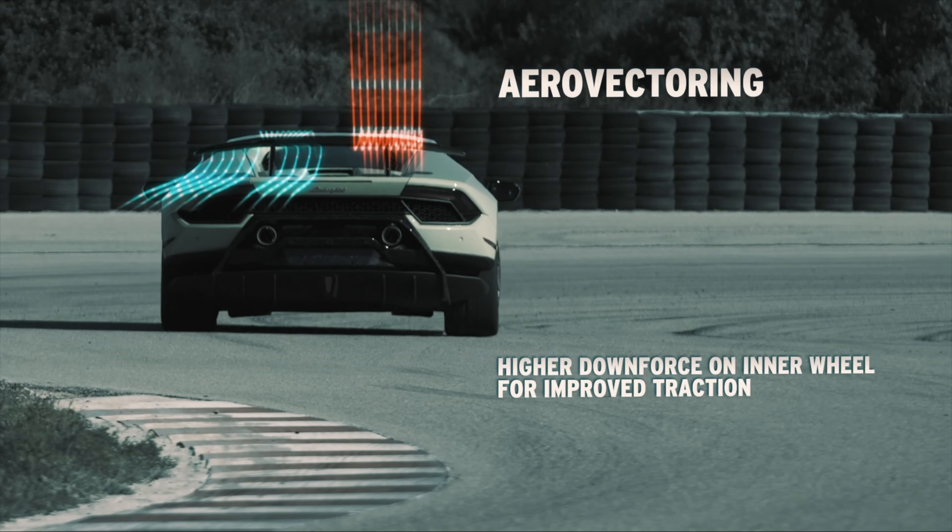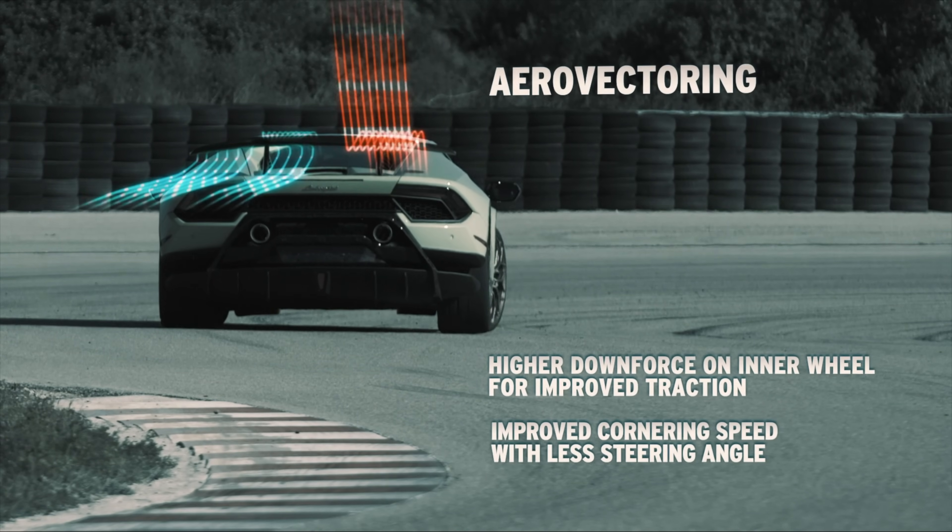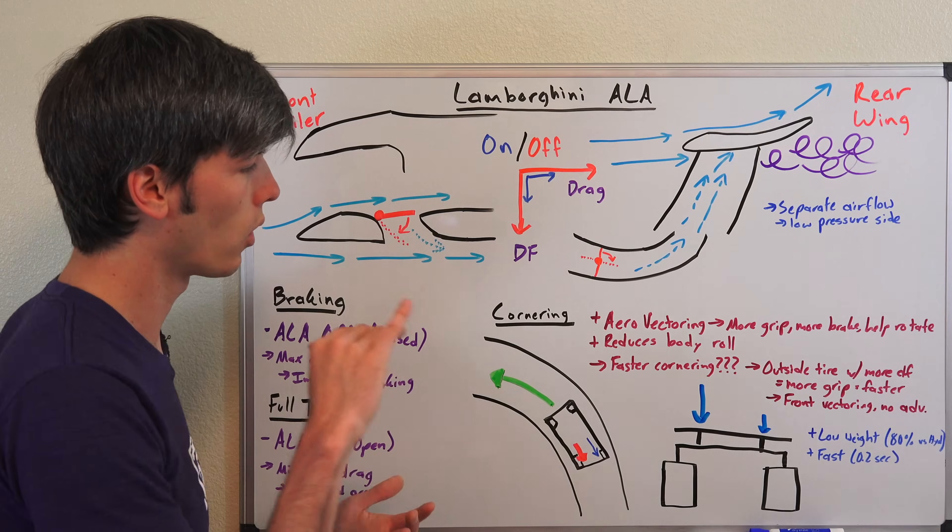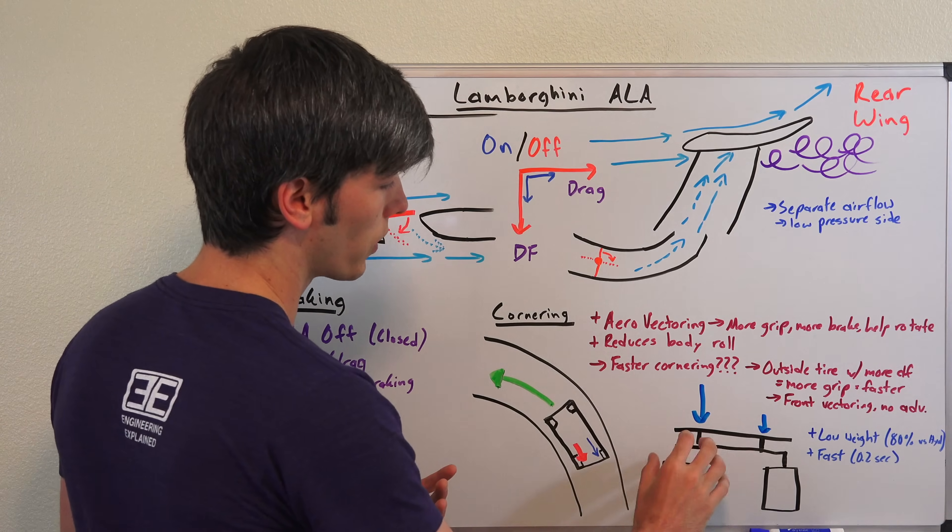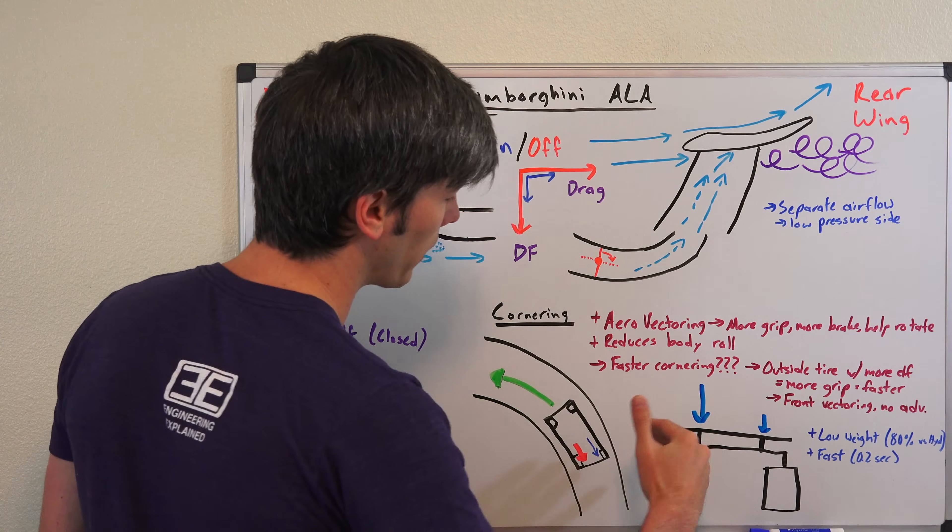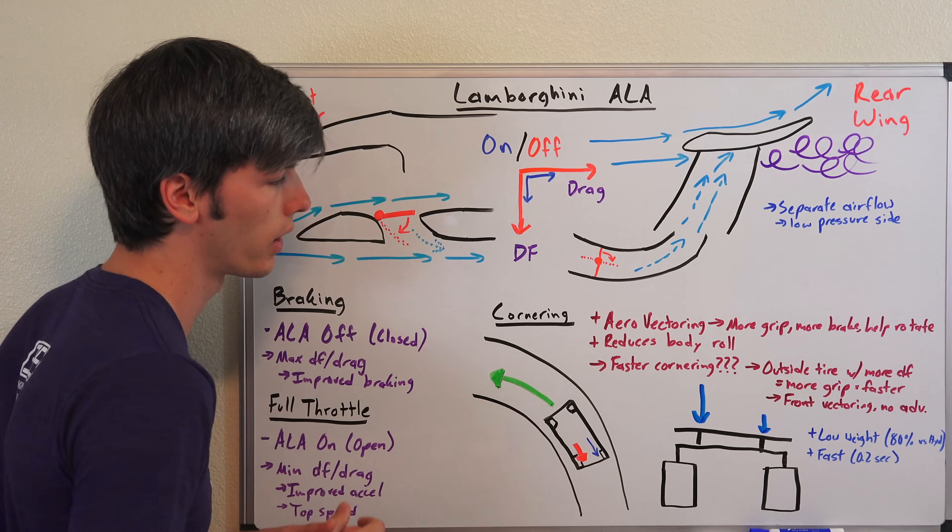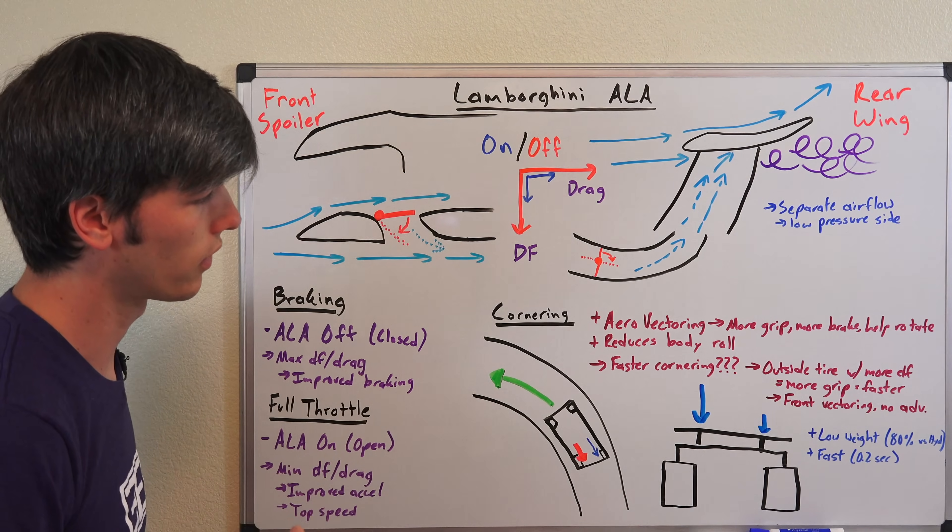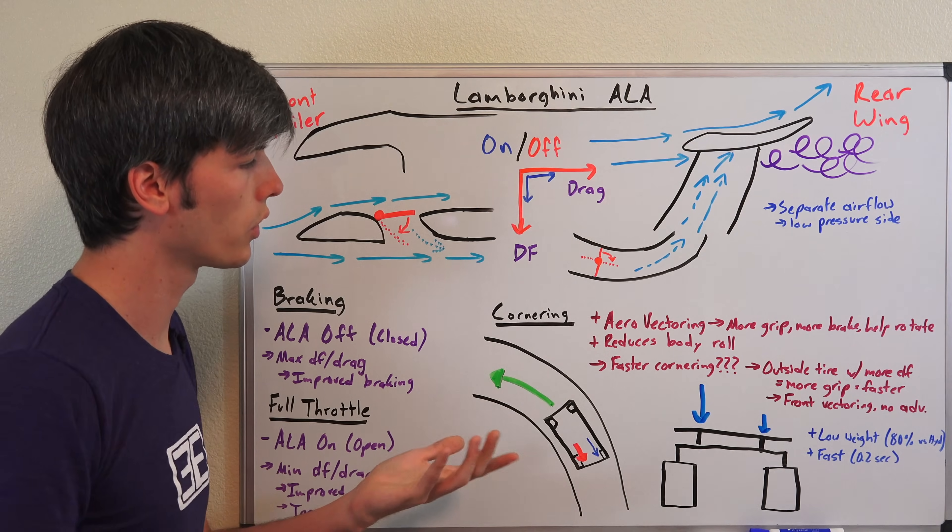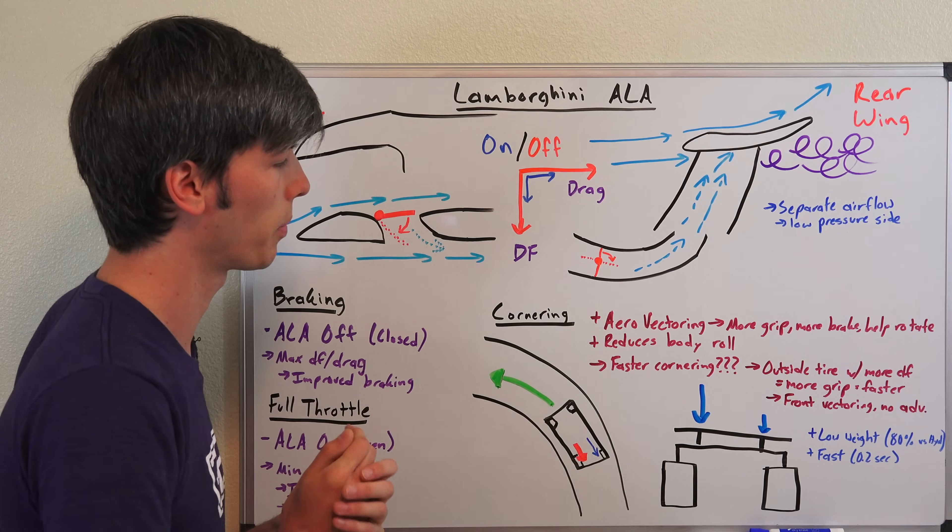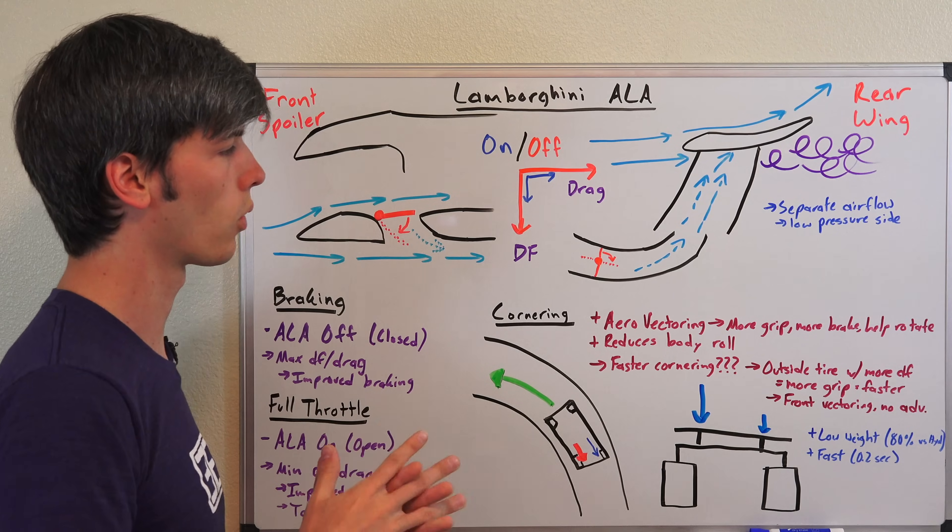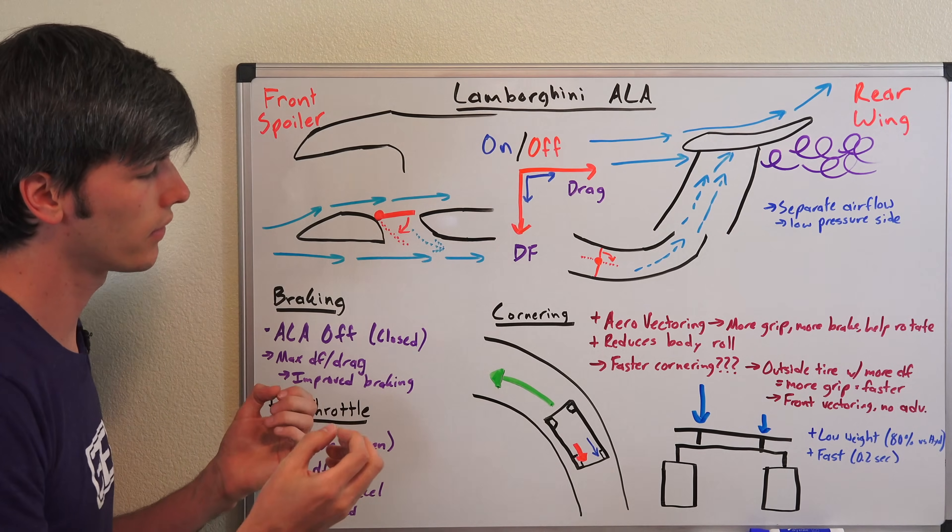You can also reduce body roll by having - obviously the car is going to send load transfer to the outside tire as you're going around that corner. By putting more aerodynamic pressure on the inside you can help mitigate that body roll. I don't think that's the pure reason they've done that - you can of course alter that with suspension settings. This claim about faster cornering, this is the interesting part.